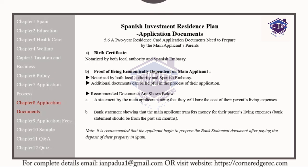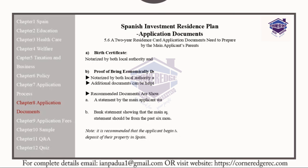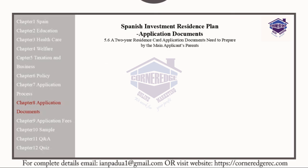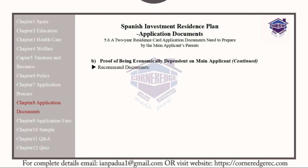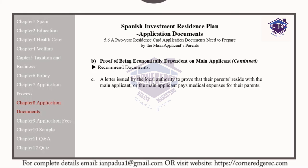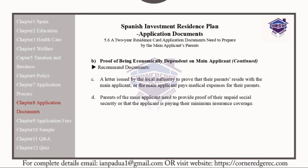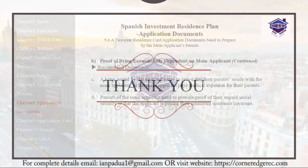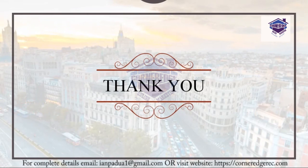It is recommended that the applicant begin to prepare these bank statements after paying the deposit on their property in Spain. Additional records for the parents of the main applicant include a letter issued by local authorities proving that the parents reside with the main applicant or that the main applicant covers medical expenses for the family. Parents of the main applicant also need to provide proof of unpaid social security, or that the applicant is paying their minimum insurance coverage. Thank you for listening.